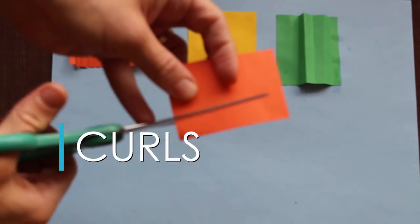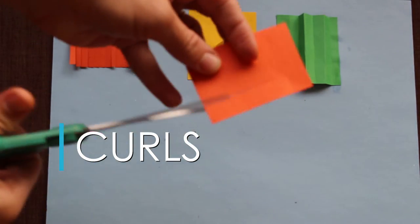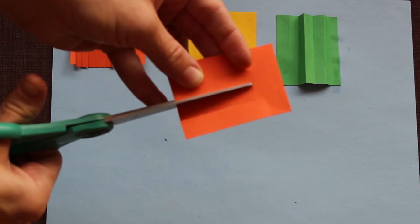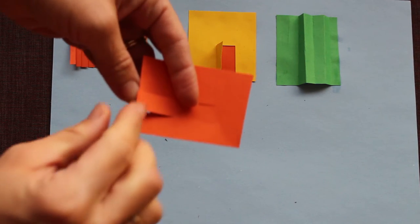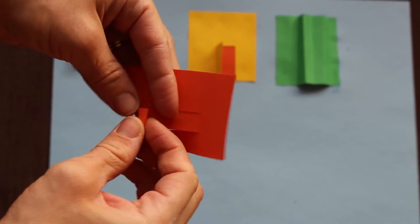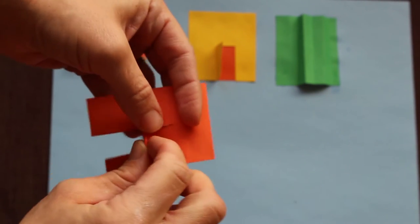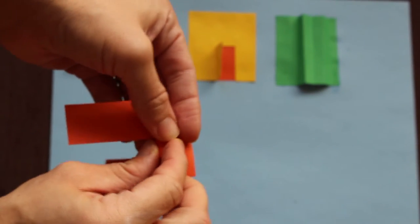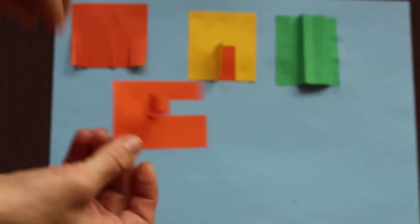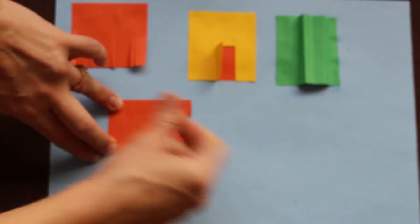Technique four, curls. Leaving the end of the paper uncut, make two parallel cuts. You should have three strips that are still attached at the end. Use your fingers to roll the middle strip like a sleeping bag or a burrito. Glue around the curl.